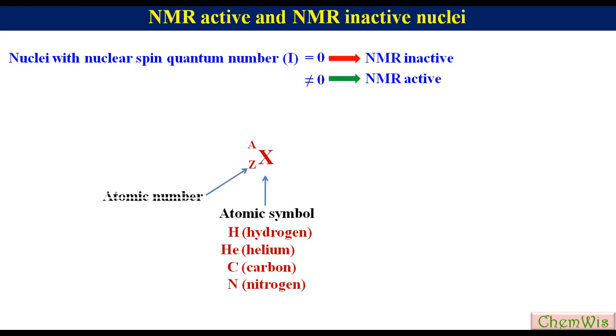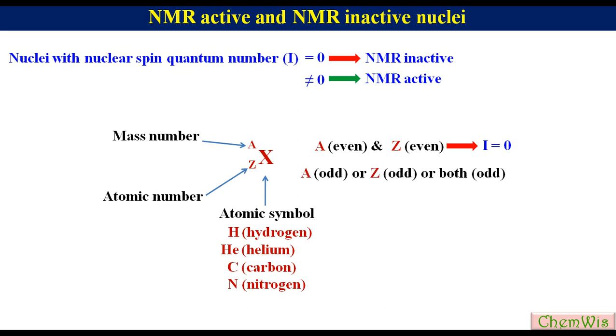Z is atomic number and A is mass number. Nuclei with both even A and even Z have I equal to 0, while nuclei with odd A or odd Z or both odd have I not equal to 0. So NMR inactive nuclei have even A and even Z, while NMR active nuclei have either A or Z or both odd.